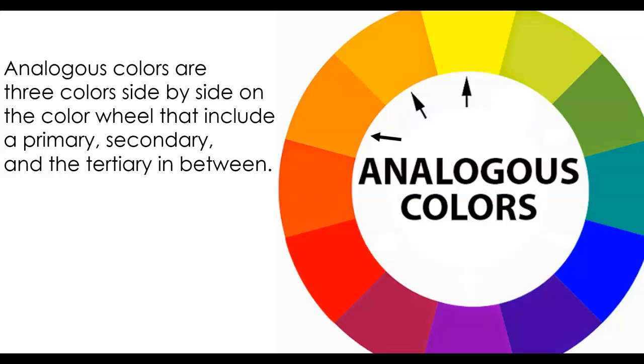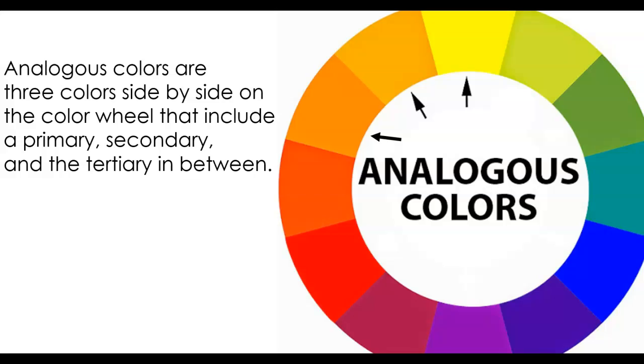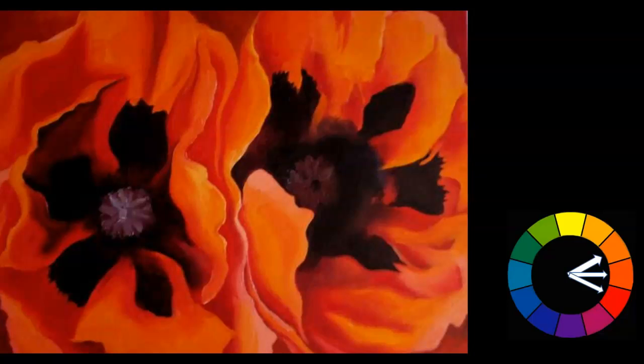Analogous colors are three colors side by side on the color wheel. This includes a primary, secondary, and a tertiary color in between. In this example of Oriental Poppies by Georgia O'Keeffe, she uses a high intensity bright red and an orange and the red-orange in between, and she also uses a yellow-orange.